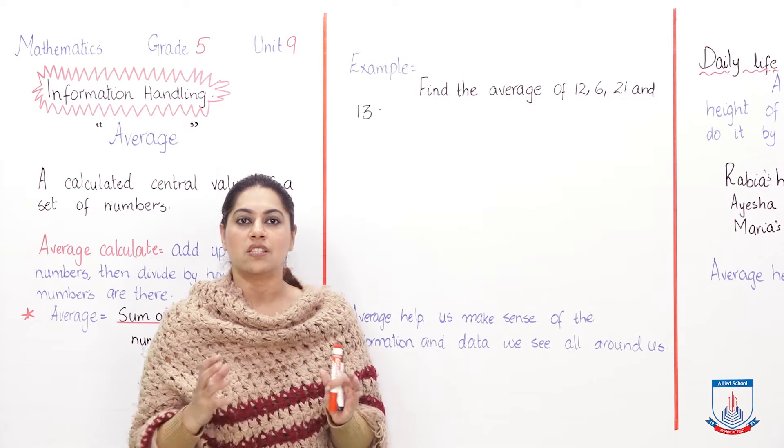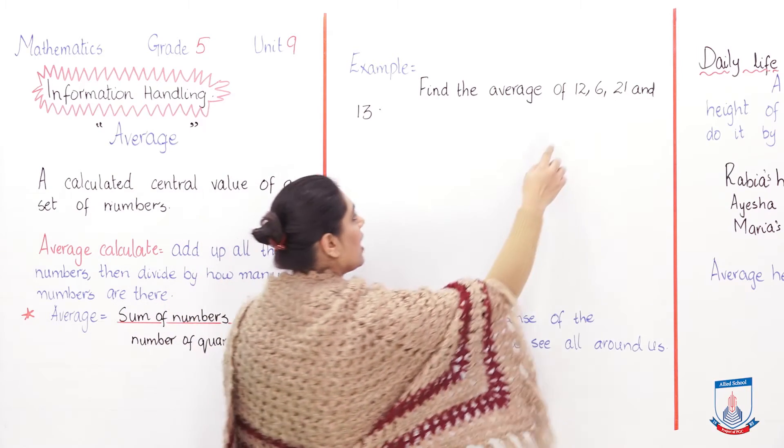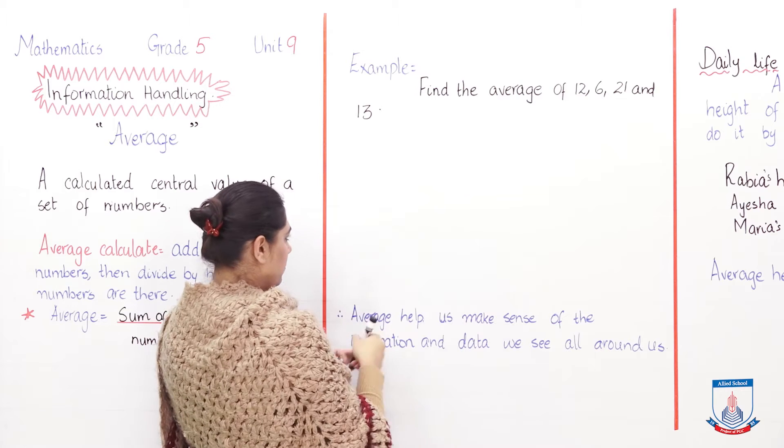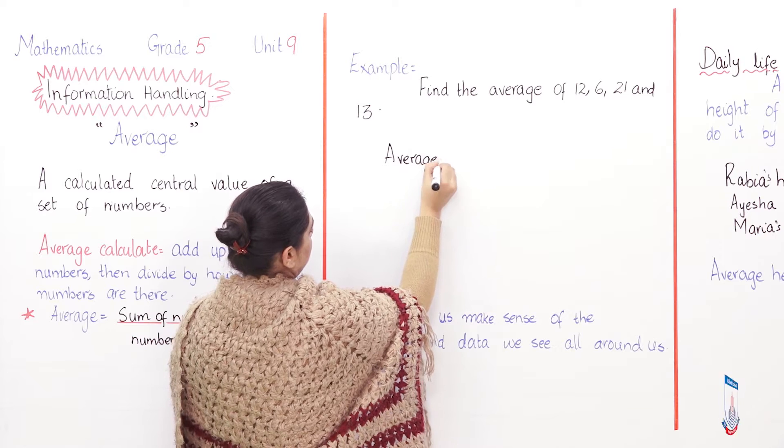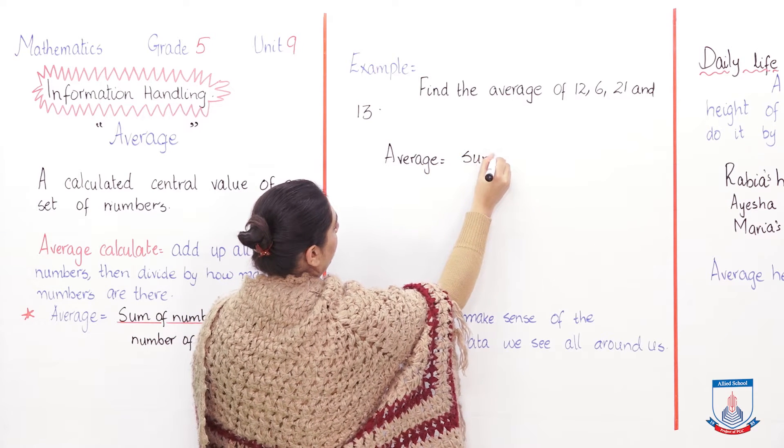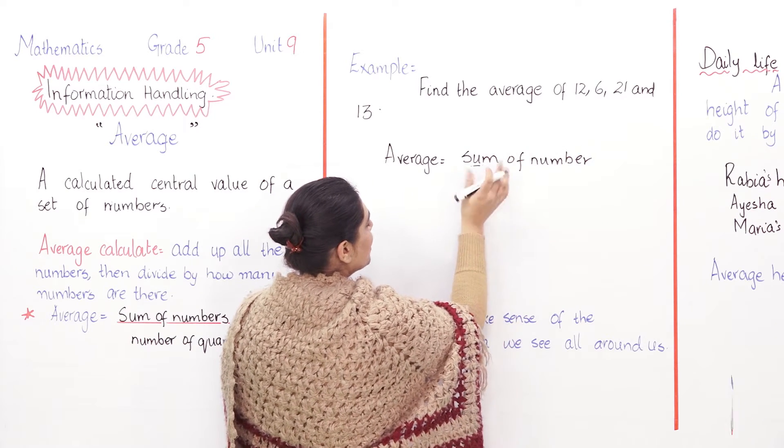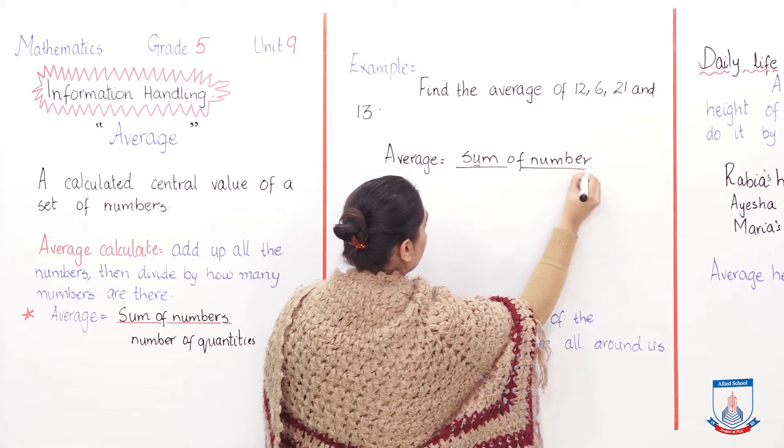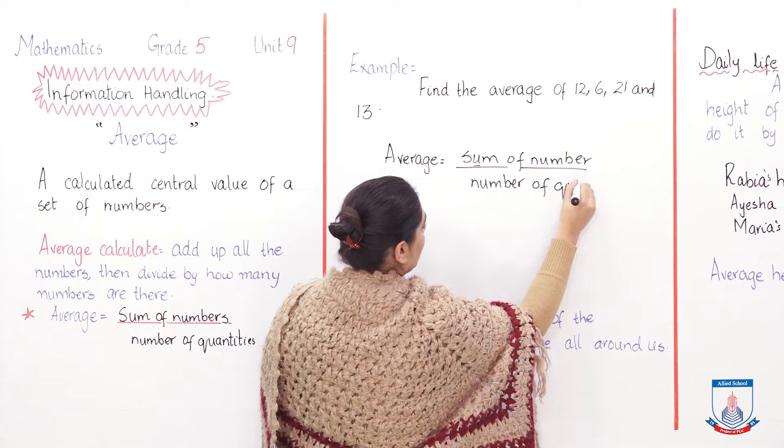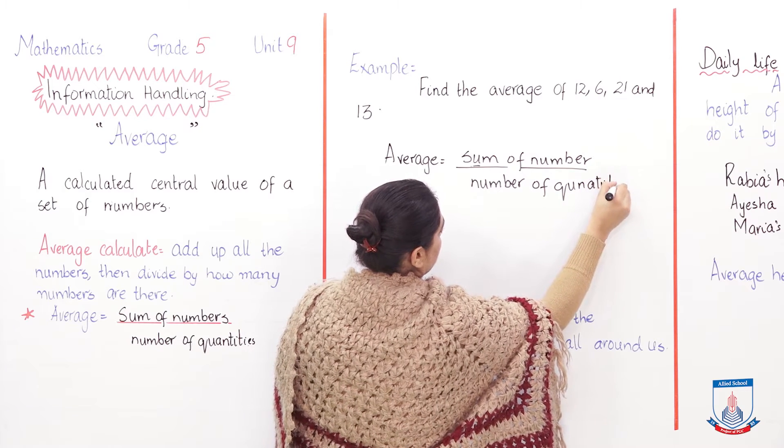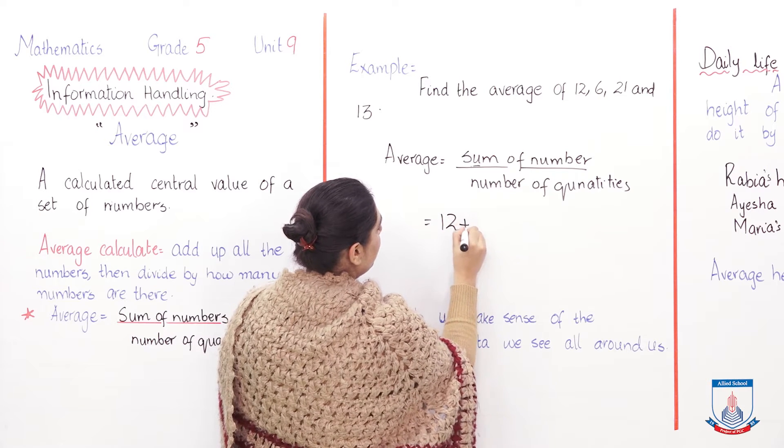Now we have these numbers given and we have to find out its average. What is the formula for average? Sum of all the numbers divided by the quantity, exactly. So what is the sum? First we will add all these numbers. Average equals sum of numbers—I hope students you know the meaning of sum. Sum means adding up all the numbers and then divided by the number of quantities.